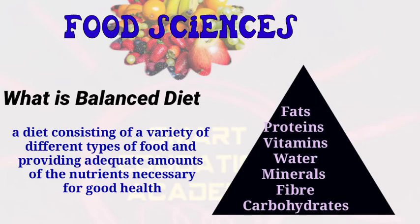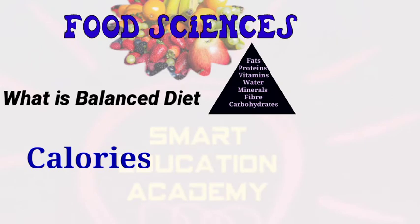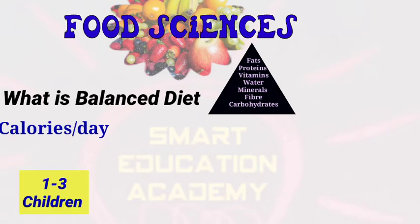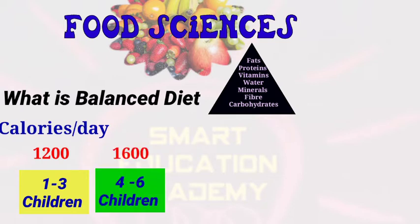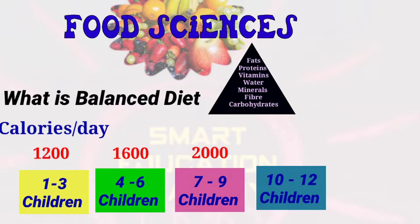Different age groups require different calories. Children aged 1–3 and 4–6 have their own requirements. Children aged 7–9 need 2,000 calories as they are very hyperactive with high mental and physical activity. Children aged 10–12 need 2,500 calories because they are in a growing age requiring more for development.